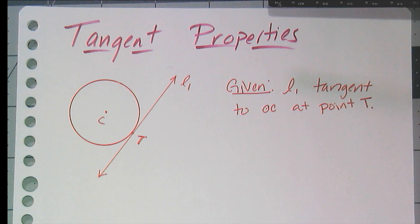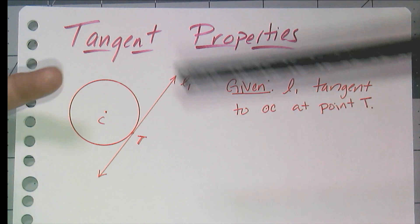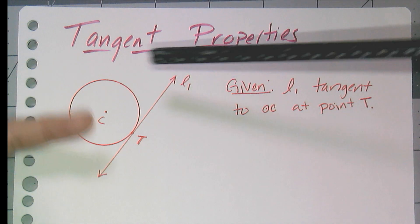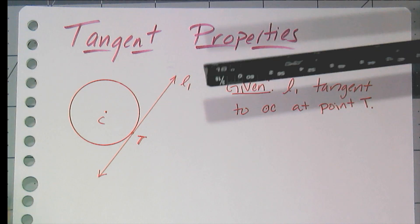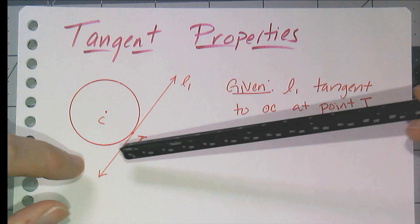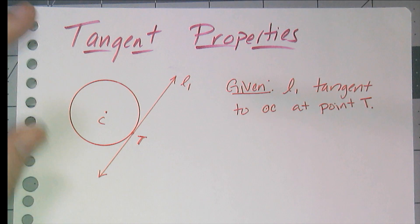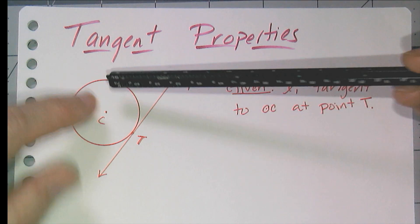Hey, y'all. In this video, we are going to talk about tangent properties. And I don't mean the function tangent from trig. I mean tangents, the line to a circle. Tangents, remember, are lines that intersect a circle exactly once. So I have some line, and I'm telling you it's tangent to circle C at point T.